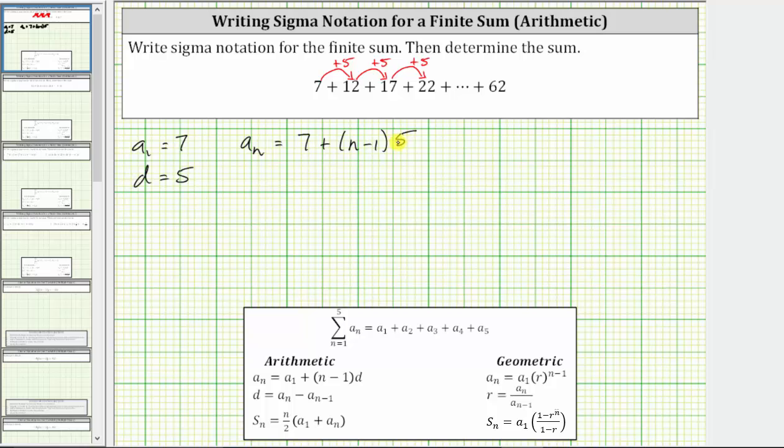And now we will simplify the formula by distributing five and combining like terms. We have a sub n equals seven plus distributing five. We have five times n, which is five n, and then minus five times one, which is five.